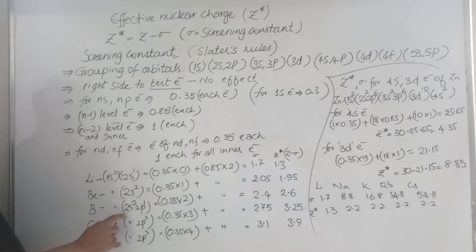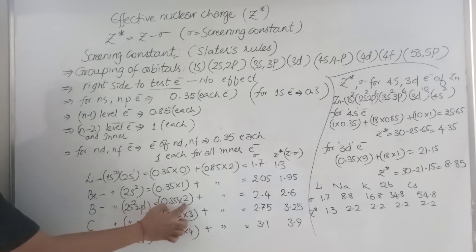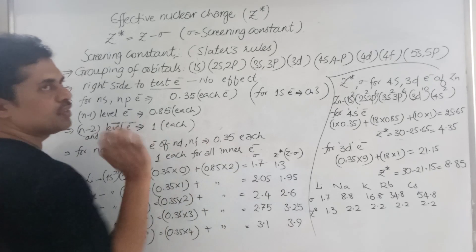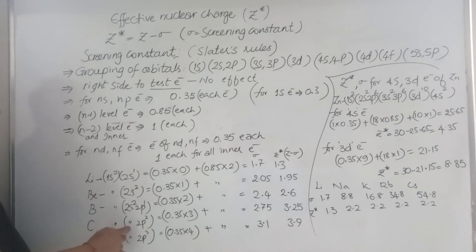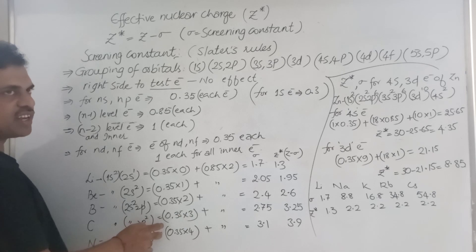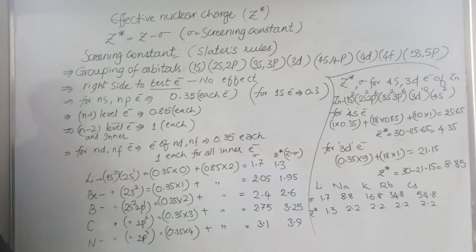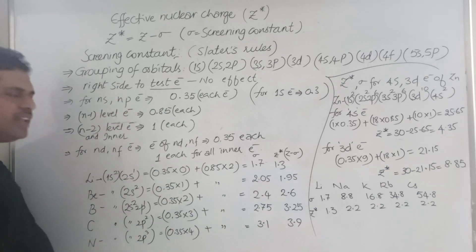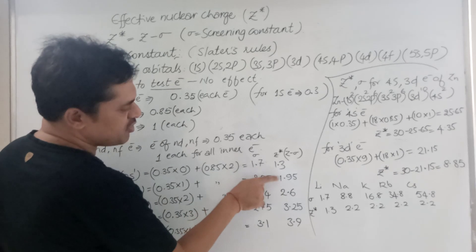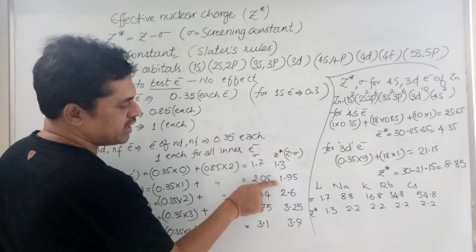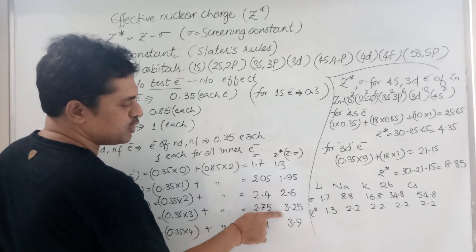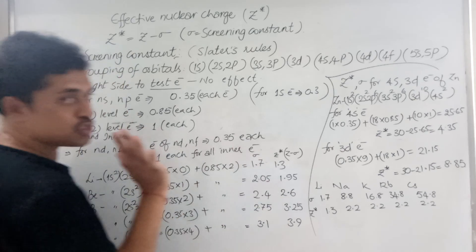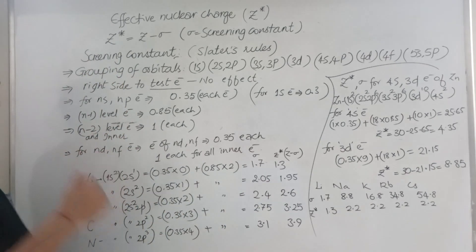For boron (1s² 2s² 2p¹): outermost shell has 3 electrons, we take 2 × 0.35. For carbon (1s² 2s² 2p²): 4 electrons in outermost, take 3 × 0.35, since the last electron is the test electron. For nitrogen similarly. In a period from left to right, the Z star value increases: lithium 1.3, beryllium 1.95, boron 2.6, carbon 3.25, nitrogen 3.9 — effective nuclear charge increases across a period.